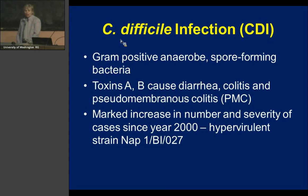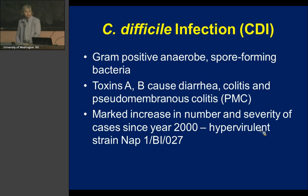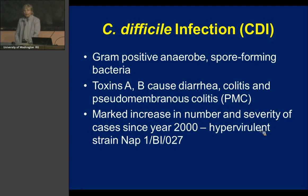C. difficile produces several toxins, but the most important are toxins A and B, and these are what actually cause the disease, which can range from mild diarrhea — which is colitis — to the most severe form of pseudomembranous colitis, and can cause death.